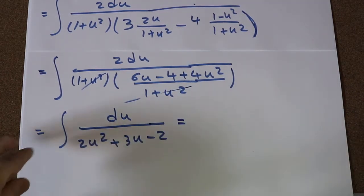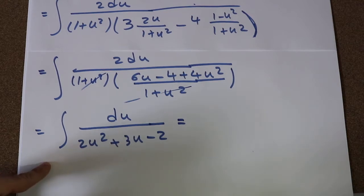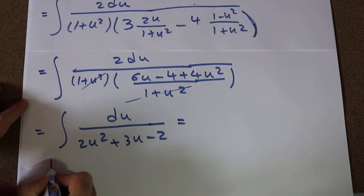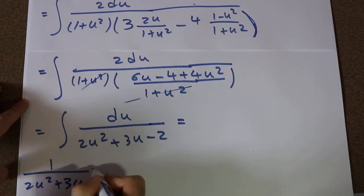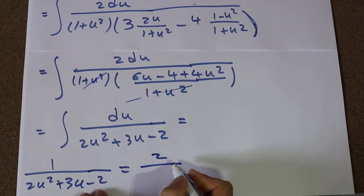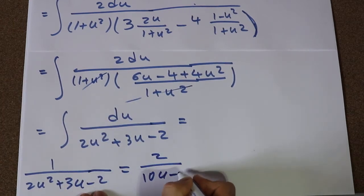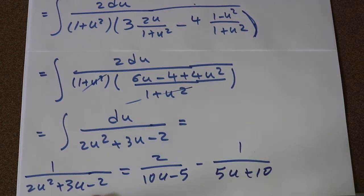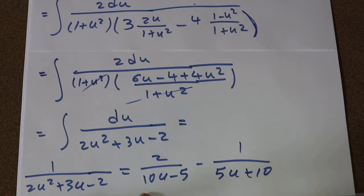Now you have this rational function. To take this integral, you need to express it in terms of partial fractions. So 1 divided by 2u² plus 3u minus 2 equals 2 divided by 10u minus 5, minus 1 divided by 5u plus 10. If you're not sure how to do the partial fraction decomposition, write in the comment section and I will explain.